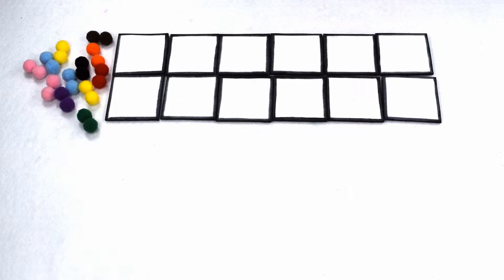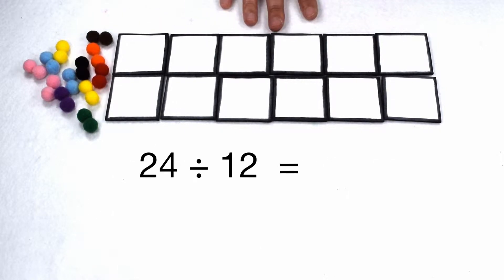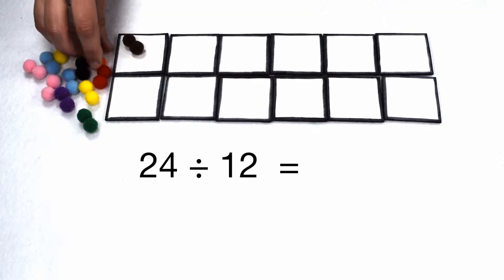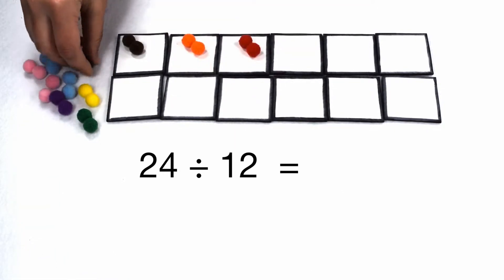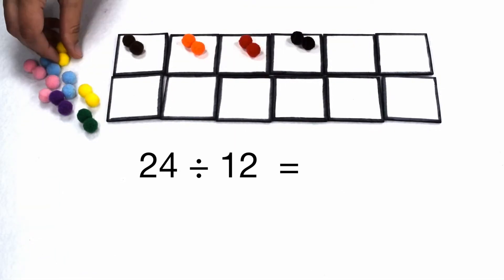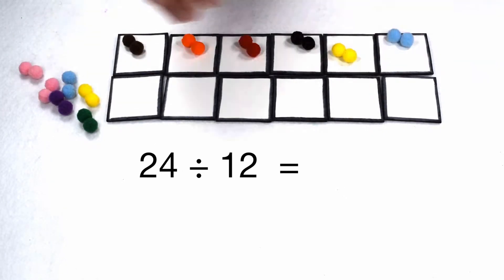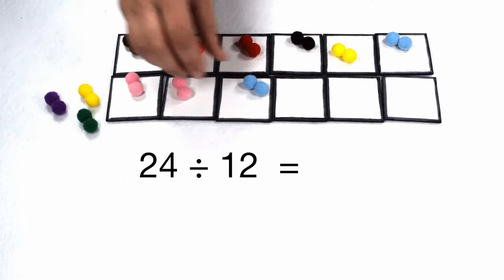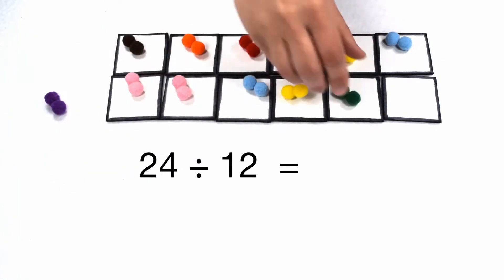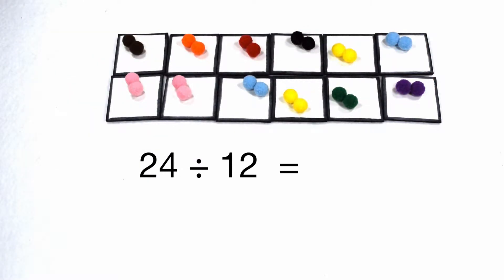Let's test this out. Here we have a dividend of 24 that we want to divide by a divisor of 12. That means we need to put 24 items into each group with nothing left over and no remainders. As we separate our 24 items into 12 groups, we can do so by putting the same number of items in each group. 24 divided by 12 gives us 2.